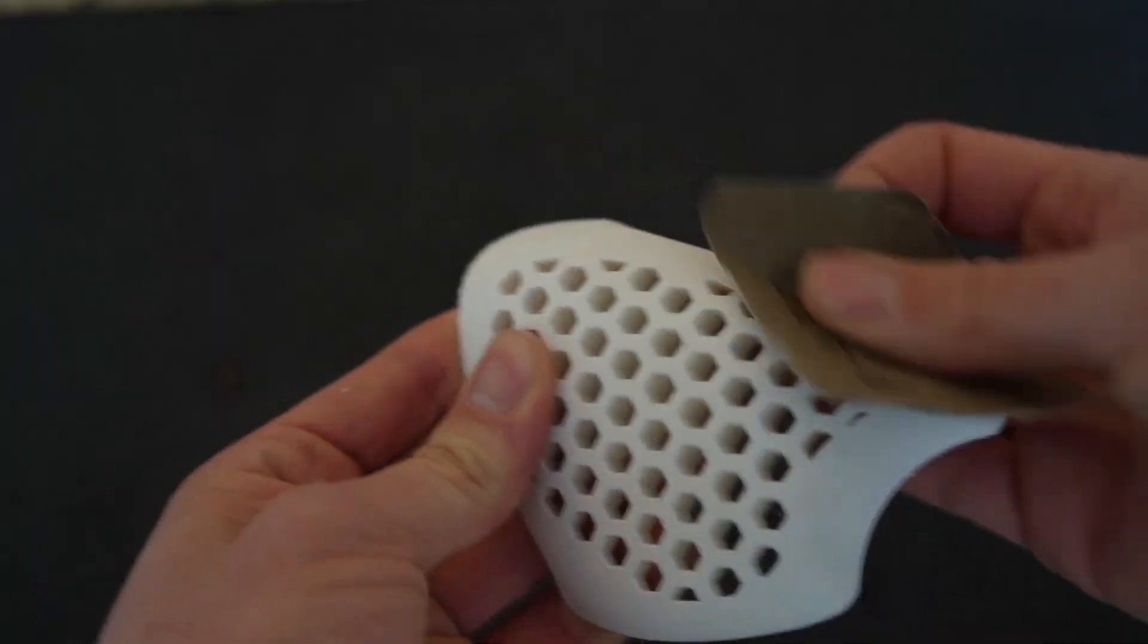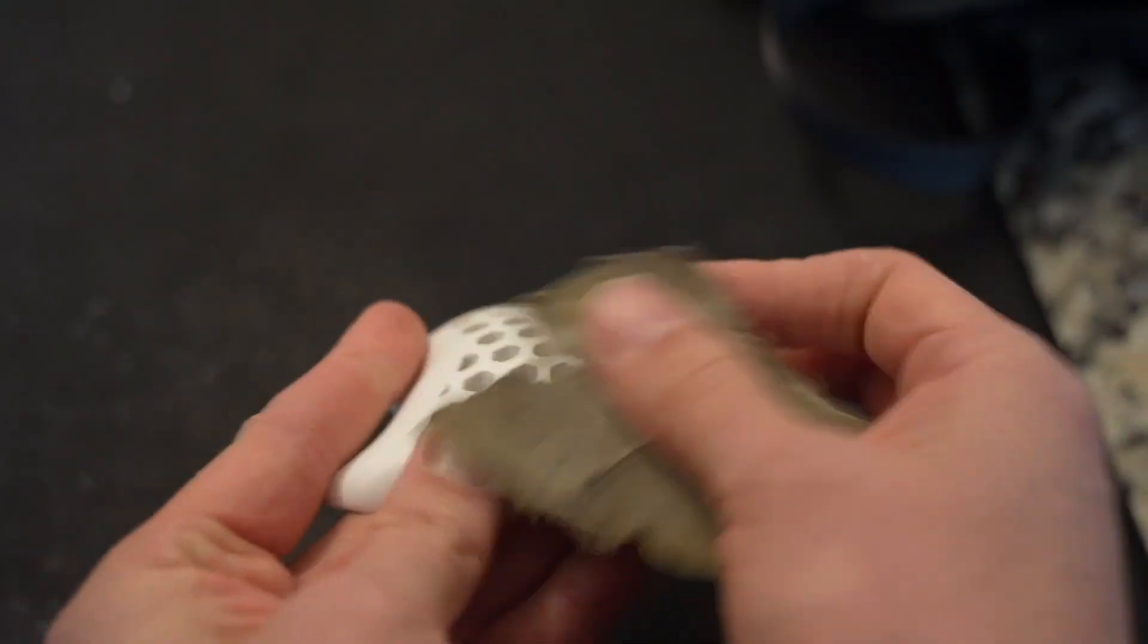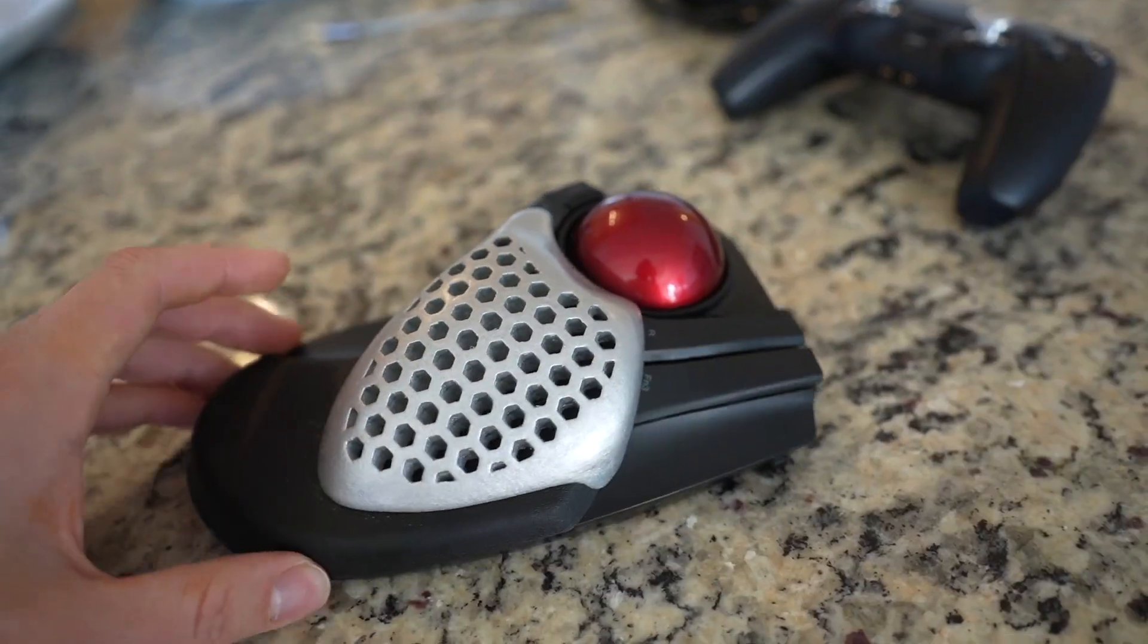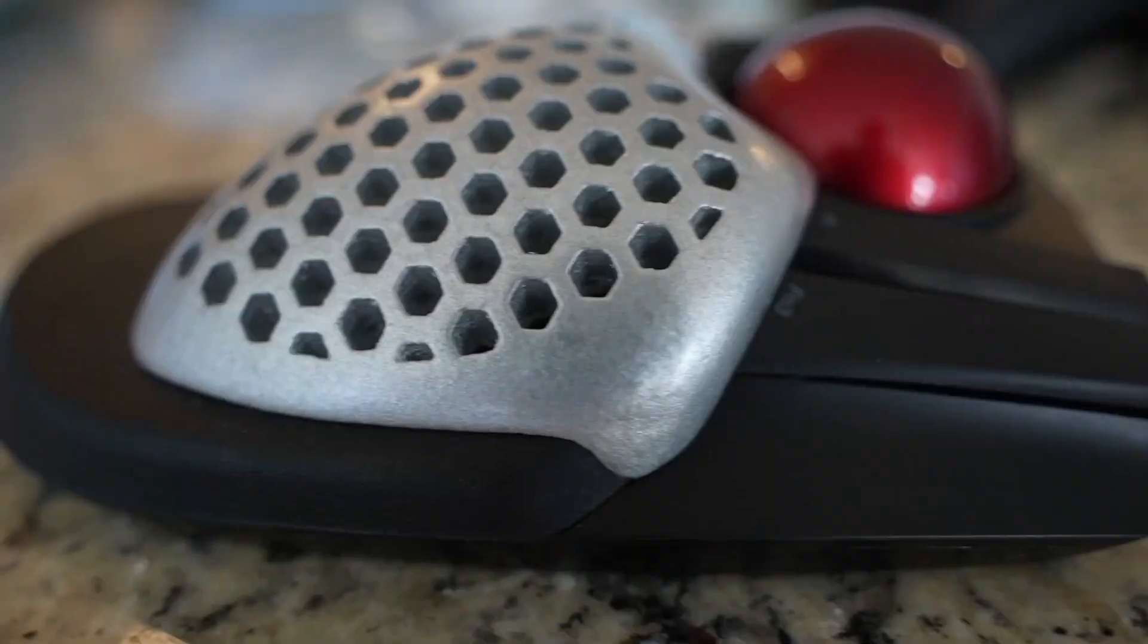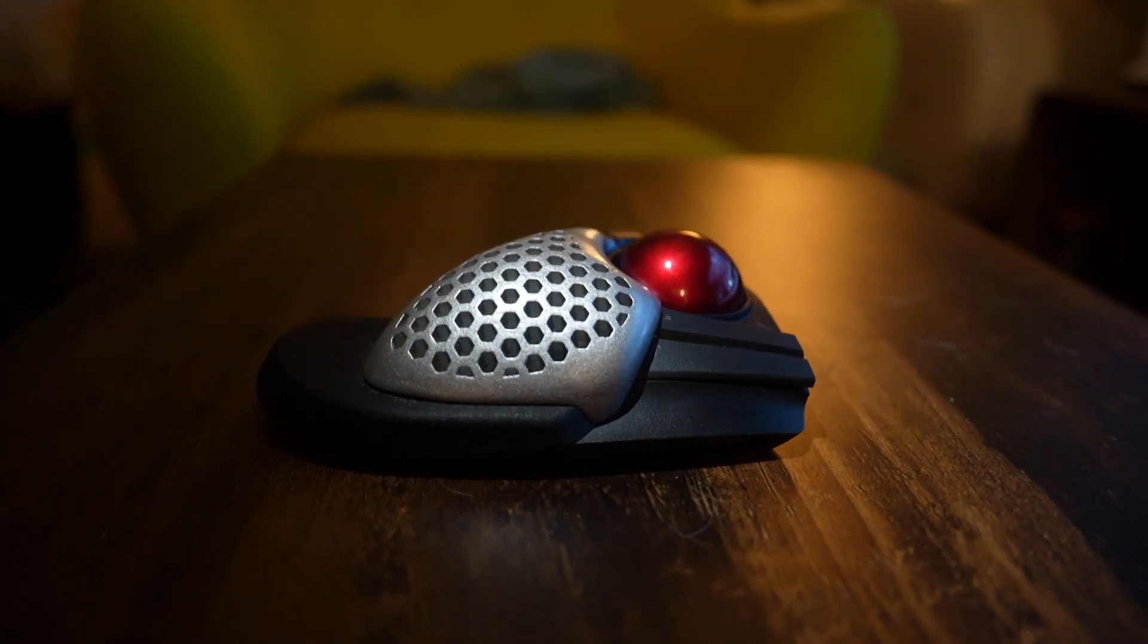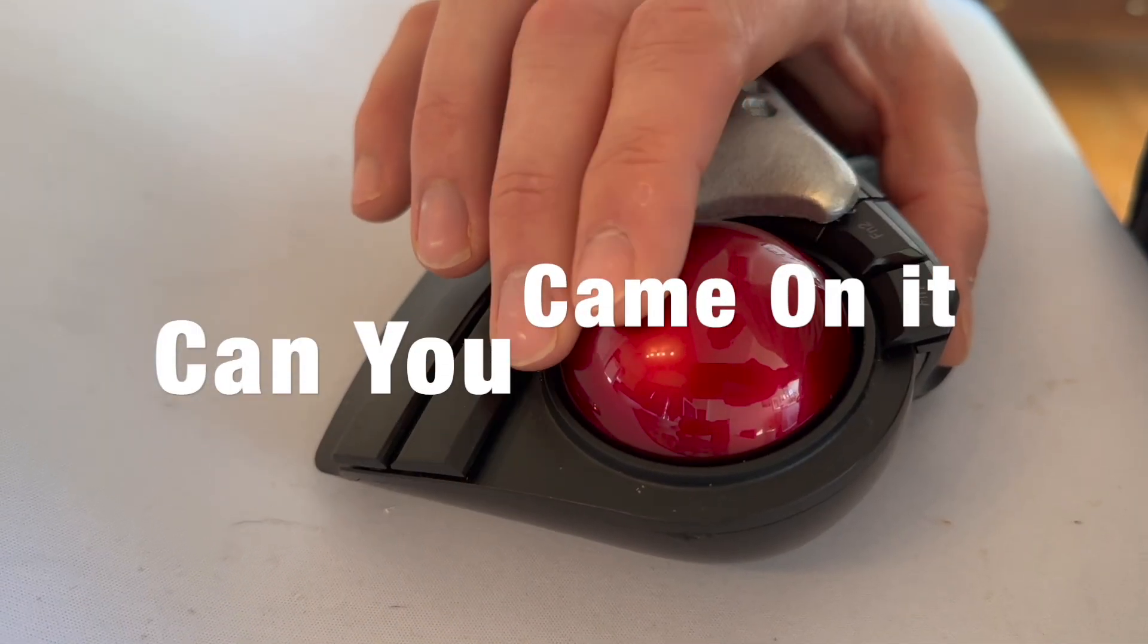The 3D print is done, so I alternate between sanding and coats of paint until I'm reasonably happy with it not looking too much like a 3D print. So now it looks good. It's finally comfortable for me, and the question that remains is, what's it like to use, and can you game on it?